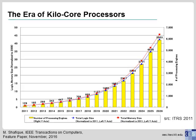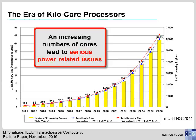These Manycore processors typically exhibit hundreds to thousands of cores, as shown in this trend by ITRS. An increasing number of cores typically leads to significant power density and thermal management issues.